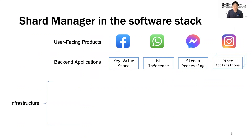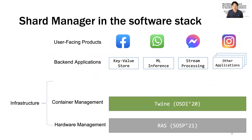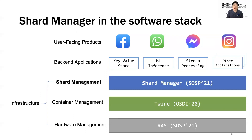To provide a high-level overview, from the bottom of the stack, a hardware management system called RAS manages hardware resources. On top of that, a container management system called Twine manages containers running on hardware provided by RAS. On top of Twine, Shard Manager, which I'm presenting today, helps scale and operate backend services by providing common solutions to various complex problems by assigning shards to containers.